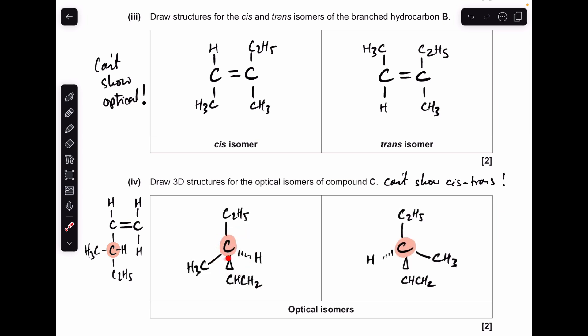So all I need to do now is show this in 3D and do the mirror image here. So remember, we just draw tetrahedral arrangement around the chiral centre. And it doesn't matter which order you put your groups on in the first one, so long as you do the mirror image of what you've drawn on the left, on the right.